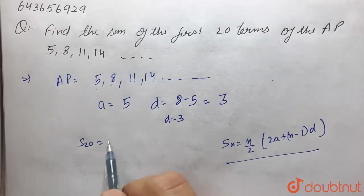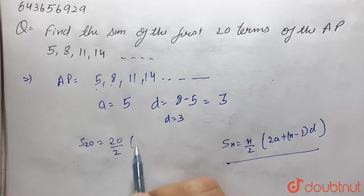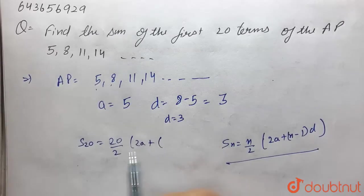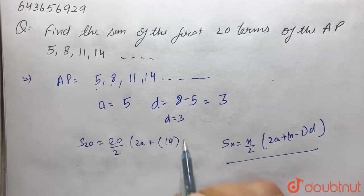S₂₀, that is sum of 20 terms, becomes 20/2 into 2a plus 19 into d.